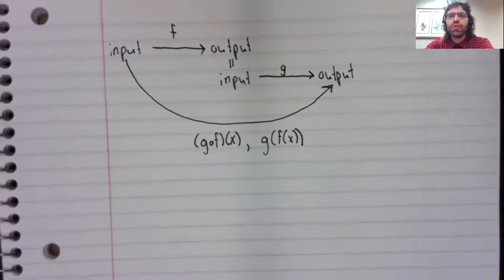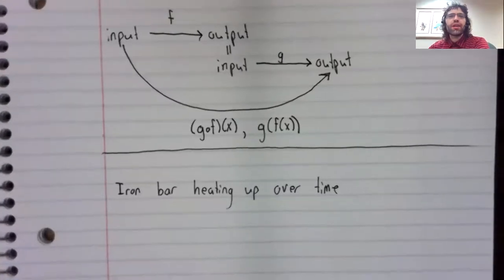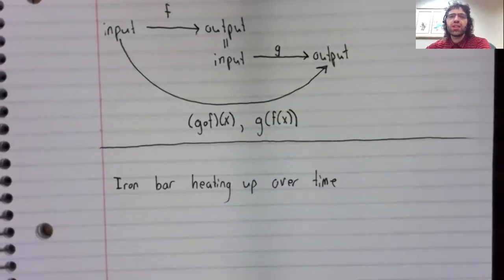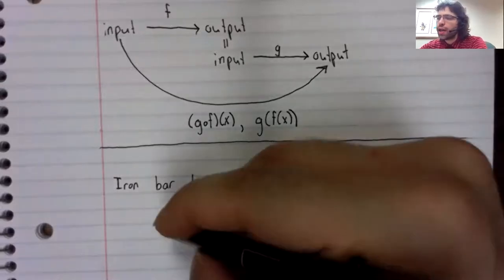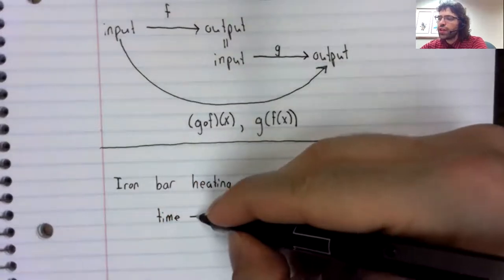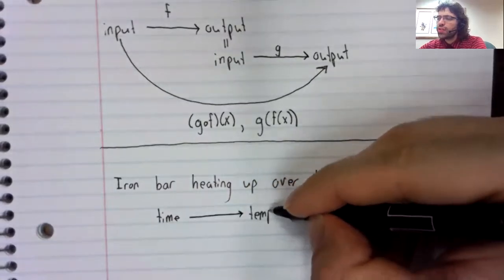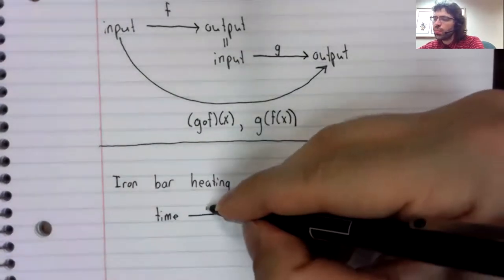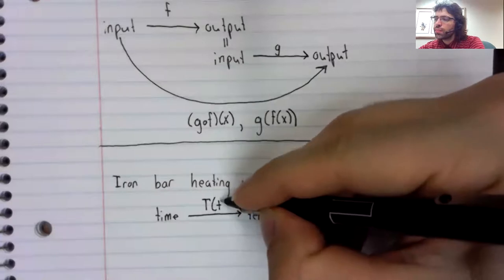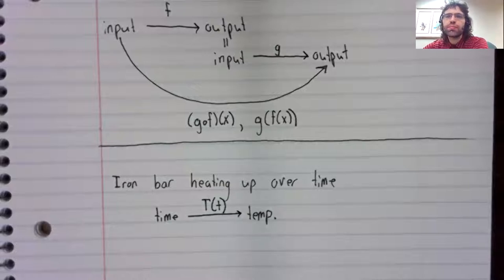As an example of composition, we'll also show you how to do it if you've forgotten. Let's say you have an iron bar that is heating up over time. So you define a function that takes time as its input and gives temperature as its output.